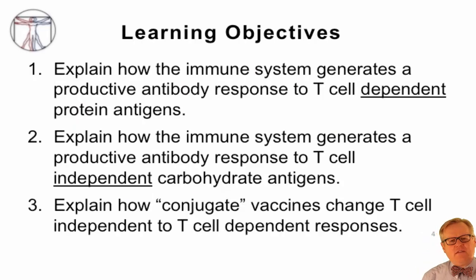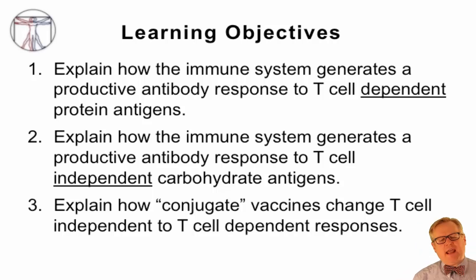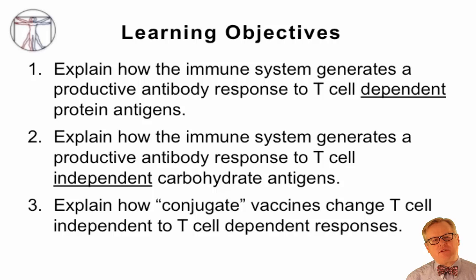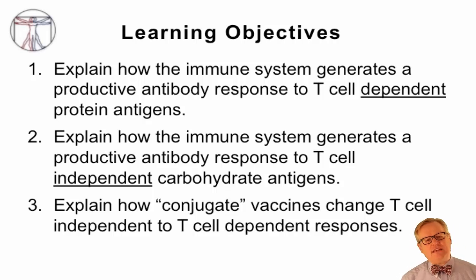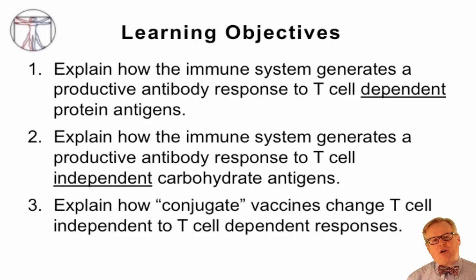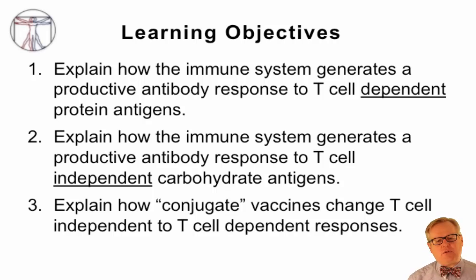At the end of this video, you should be able to explain how the immune system generates a protective antibody response to T-cell dependent or protein antigens; explain how the immune system generates a productive antibody response to T-cell independent or carbohydrate antigens; and explain how conjugate vaccines change T-cell independent to T-cell dependent immune responses.